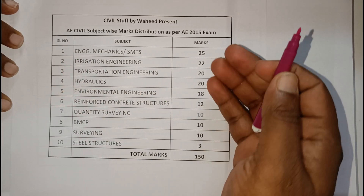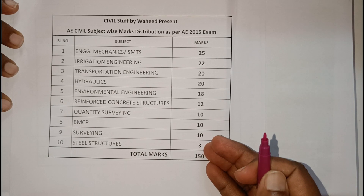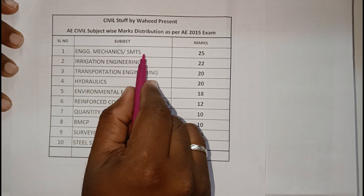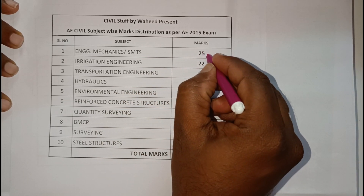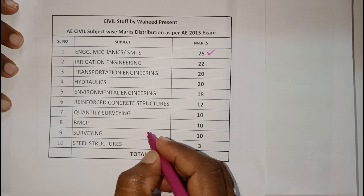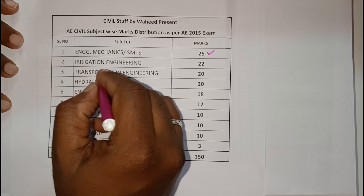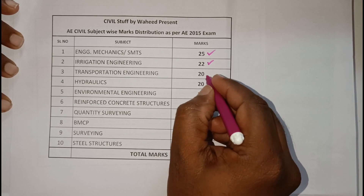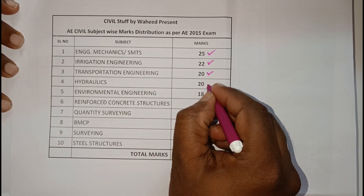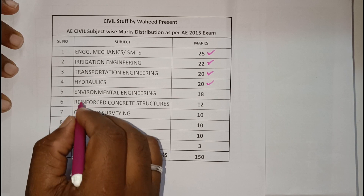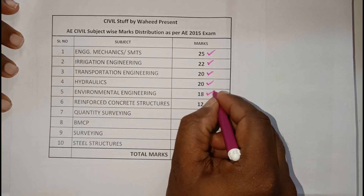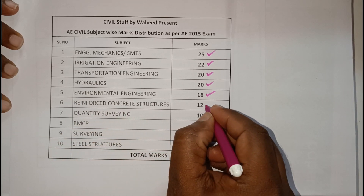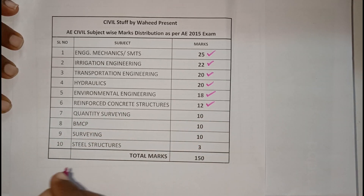I have categorized subjects from highest to lowest marks. In the first category, engineering mechanics, strength of materials, and theory of structures covers almost 25 marks. Next, irrigation engineering covers about 22 marks, transportation engineering 20 marks, and hydraulics 20 marks.